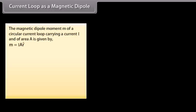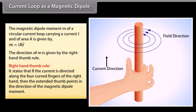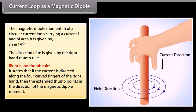Current loop as a magnetic dipole: the magnetic dipole moment M of a circular current loop carrying current I and of area A is given by M = IA R-cap. The direction of M is given by the right hand thumb rule, which states that if the current is directed along the four curved fingers of the right hand, then the extended thumb points in the direction of the magnetic dipole moment.